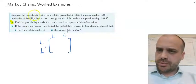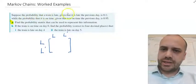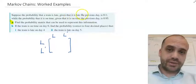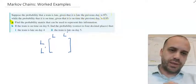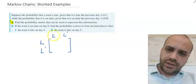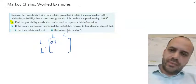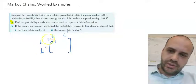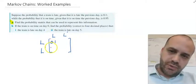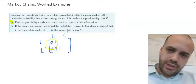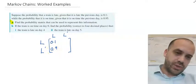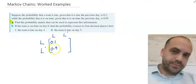Suppose that the probability the train is late given that it is late the previous day is 0.1. So late given it was late, that's 0.1. That means not late given it was late would be 0.9. These columns always need to add up to one. So as long as you know one of them, you'll know the other one.